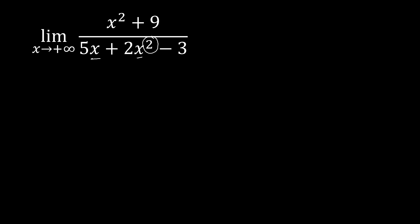The highest exponent is 2 because this one has only 1. From there, we will simplify by multiplying by 1 so that we don't change anything on the function. What we are multiplying both the numerator and denominator with is simply 1 over the variable with the highest exponent, which is x squared. We do the same thing at the top — 1 over x squared. By this, we're not changing anything to our function because 1 over x squared divided by 1 over x squared is simply equivalent to 1.